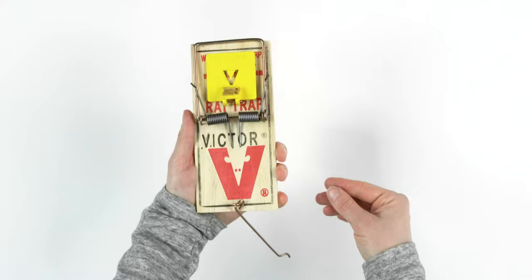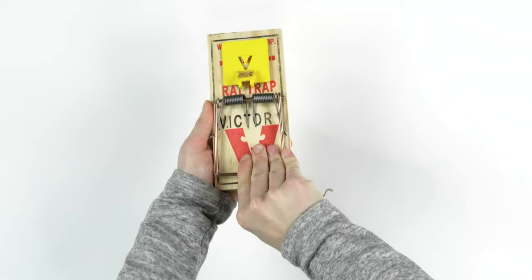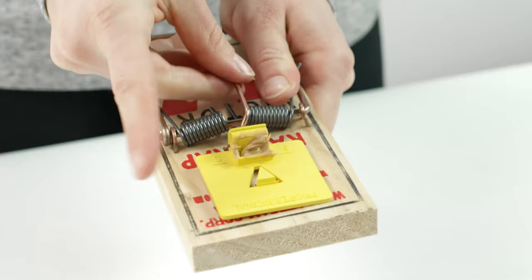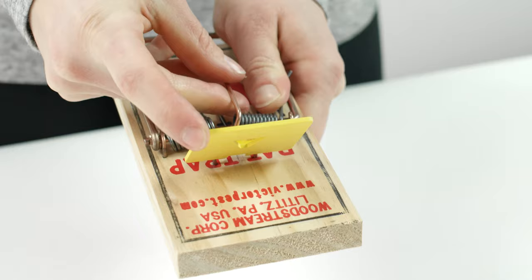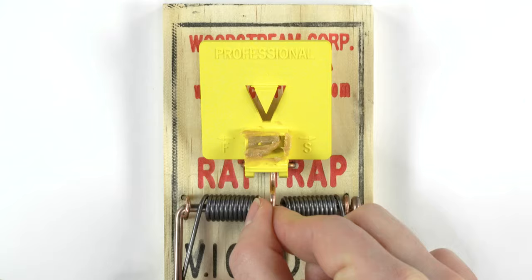Next, pull the kill bar back and hold it in place with your thumb. Move the arm bar over the kill bar and latch the end under the yellow petal. Make sure to tip the yellow petal up with your free hand so the arm bar catches properly.